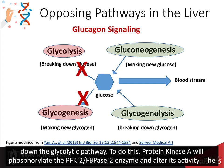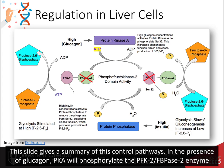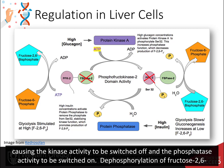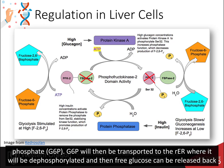To do this, protein kinase A will phosphorylate the PFK2-FBPase2 enzyme and alter its activity — the kinase activity is inhibited and the phosphatase activity is turned on. In the presence of glucagon, protein kinase A phosphorylates the PFK2-FBPase2 enzyme, causing the kinase activity to be switched off and the phosphatase activity to be switched on. Dephosphorylation of fructose 2,6-bisphosphate recovers fructose 6-phosphate, which can go through the reverse isomerase reaction and recover glucose 6-phosphate. Glucose 6-phosphate will then be transported to the rough endoplasmic reticulum where it will be dephosphorylated and free glucose can be released back into the blood.